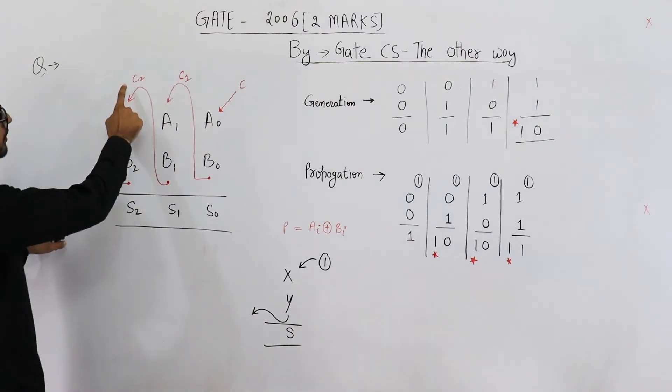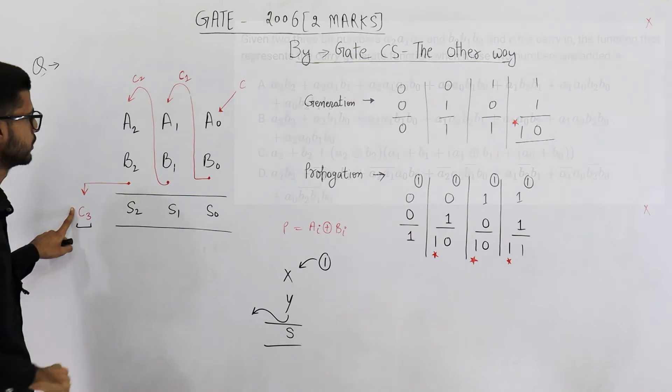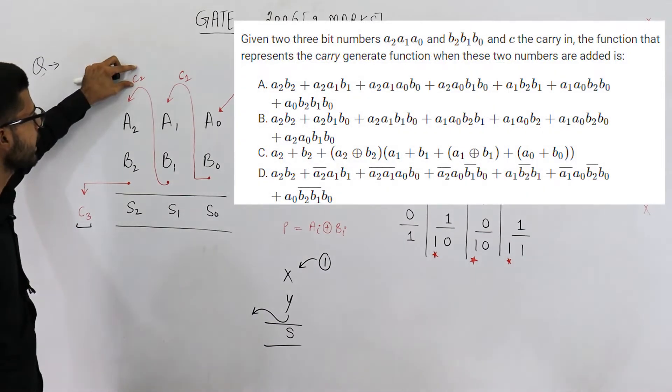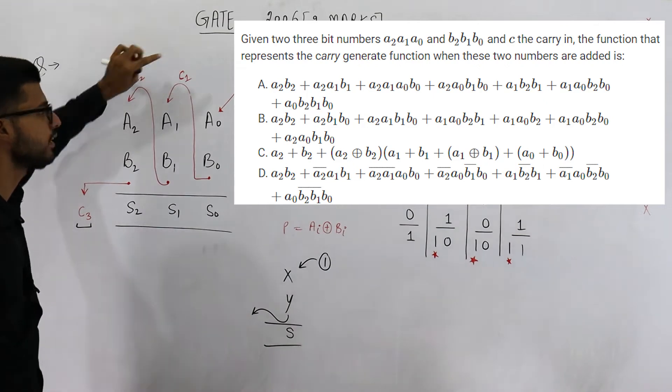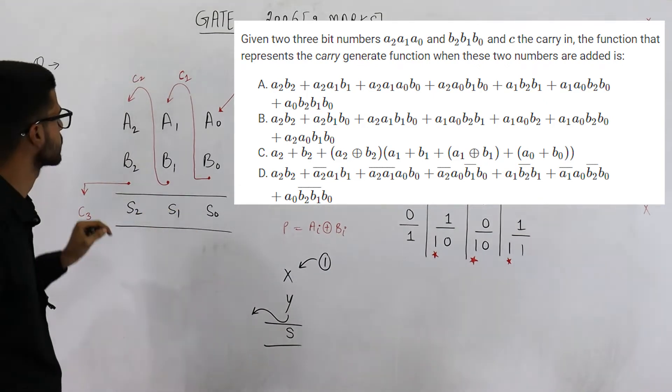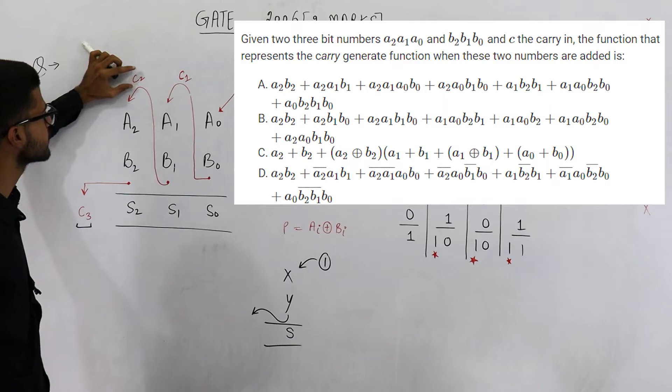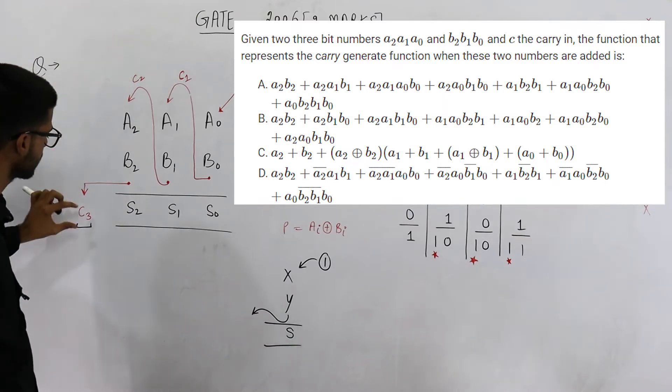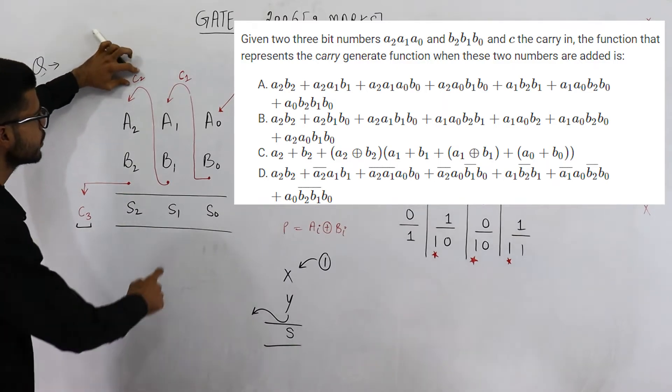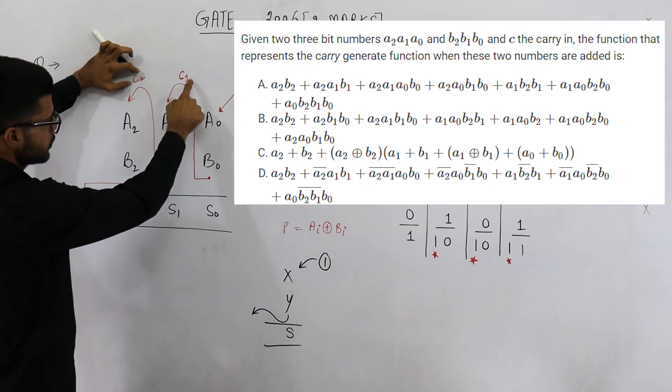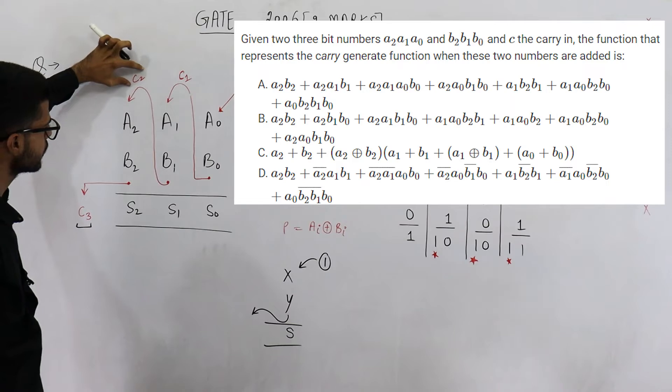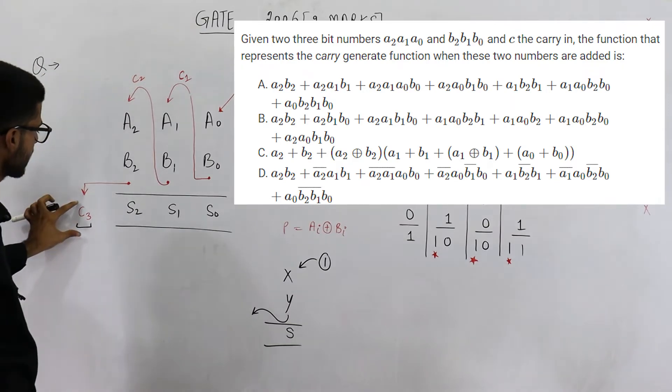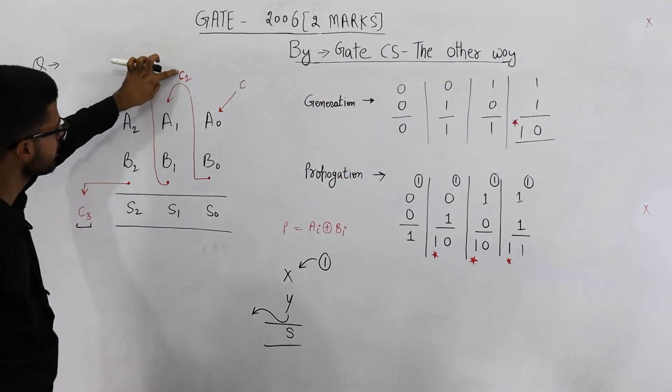Now C3 can be expressed in terms of C2, A2 and B2, but we don't have C2 in our answer. These two are intermediate carries. We don't have them in options. That means we want to eliminate C2 from the expression of C3. You can see C2 is expressed in terms of C1, A1 and B1.